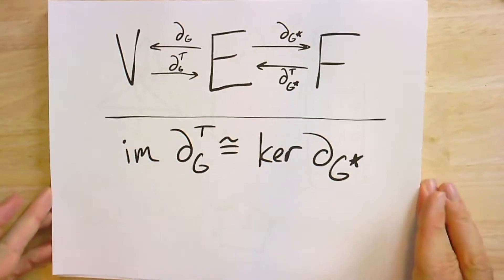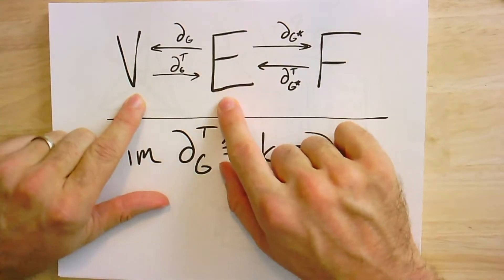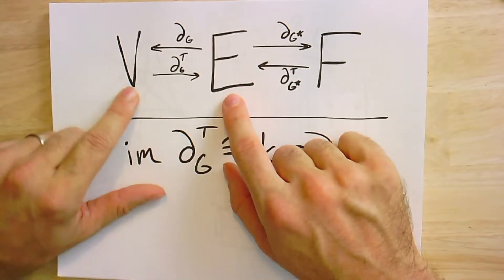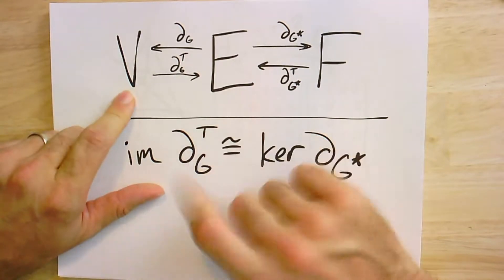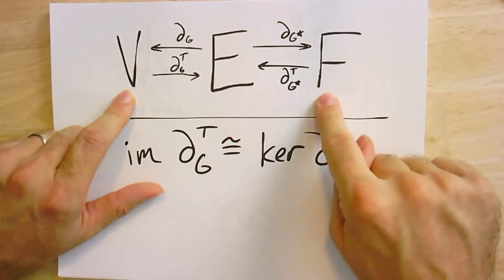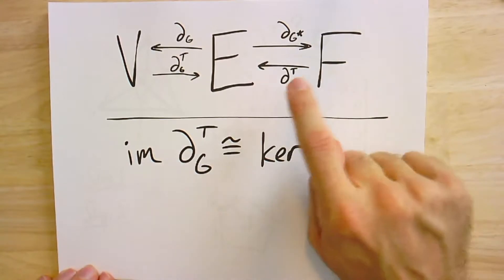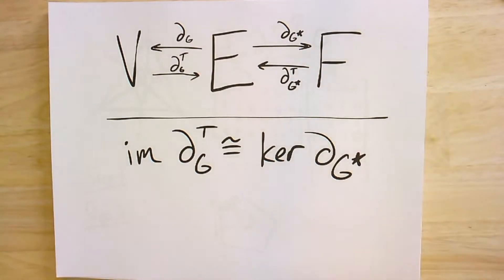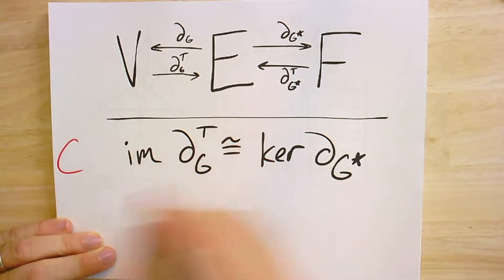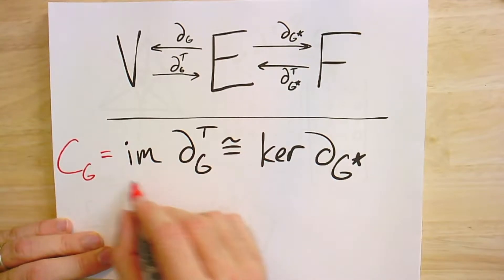In the bigger picture, remember we've got — I drew these letters all square, but I really should have used my curly V and my curly E. This is the vertex space of the graph and the edge space of the graph. And then there's also the face space of the graph, which you could think of as the vertex space of the dual graph G-star. And we have this important theorem about the cycle space of the graph, which was just the image of the co-boundary.